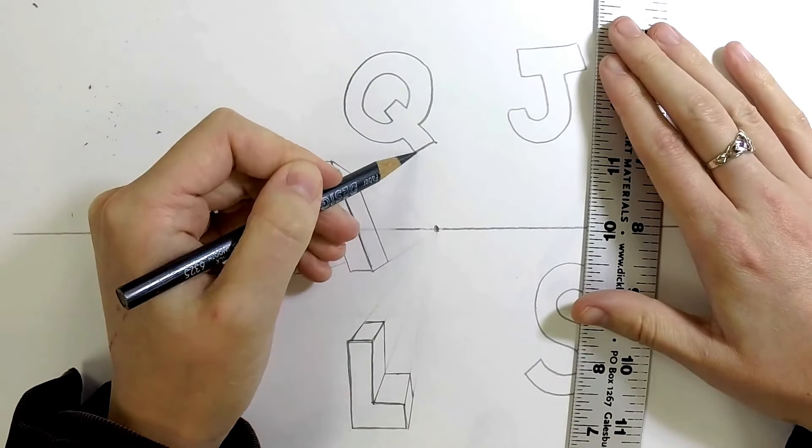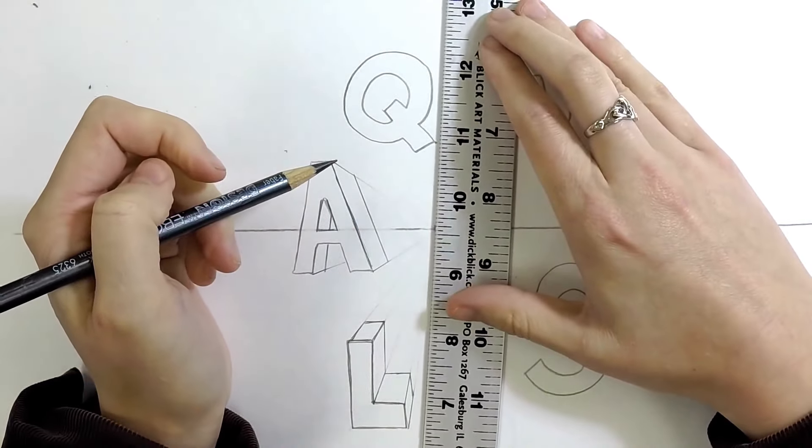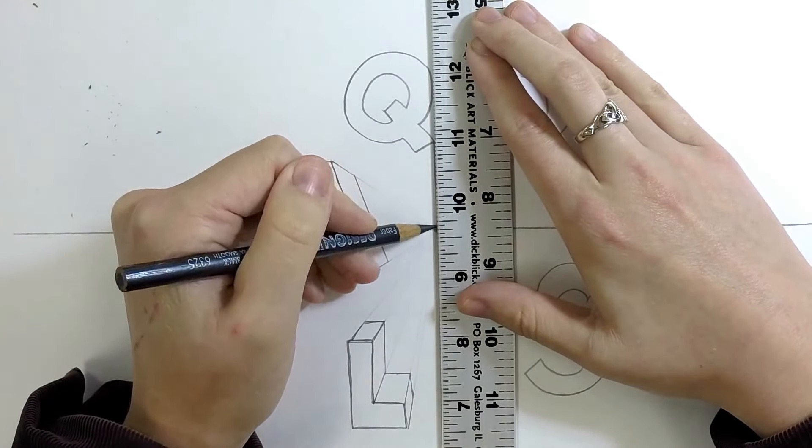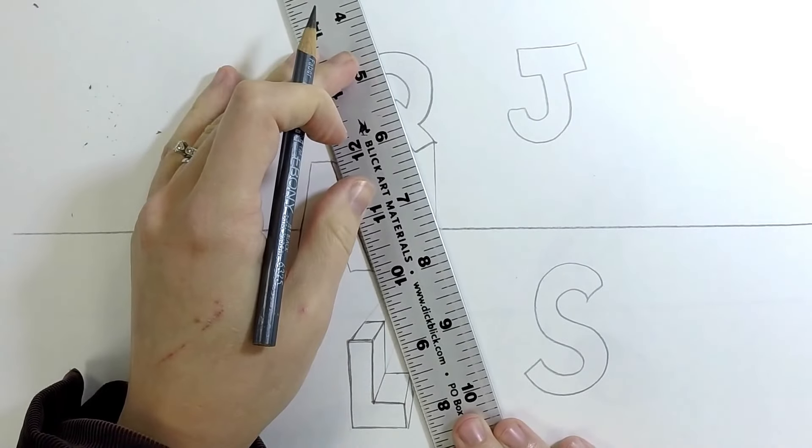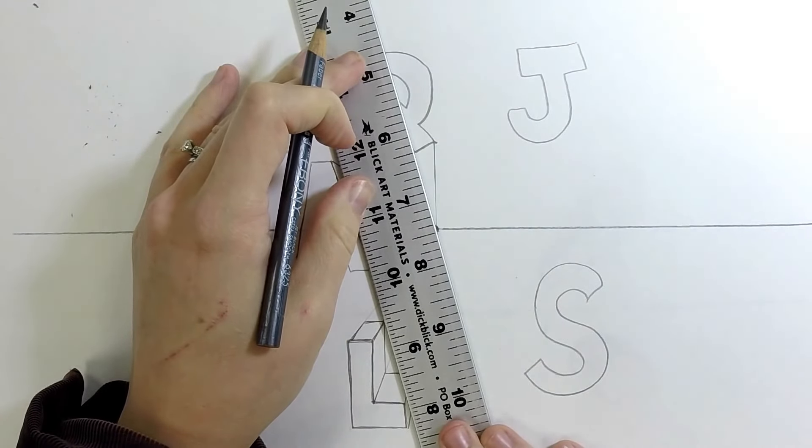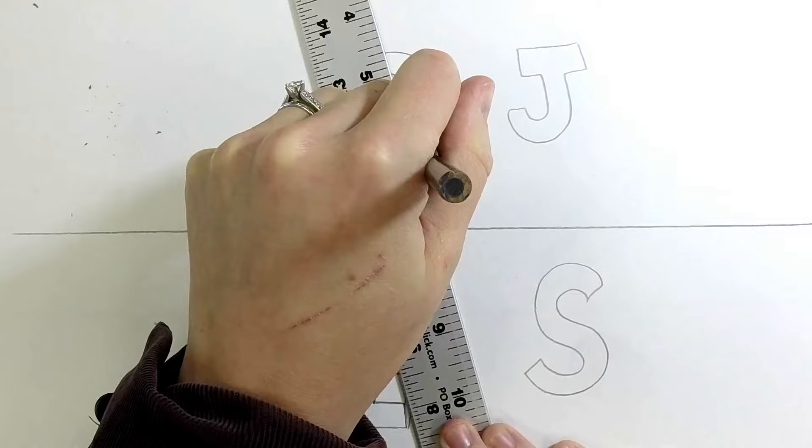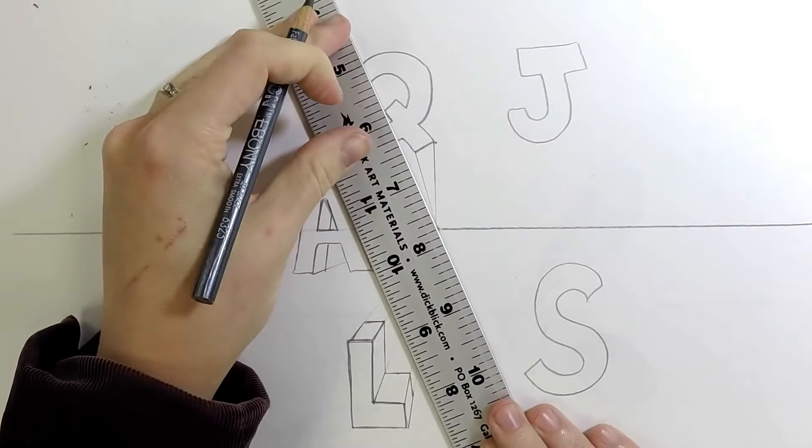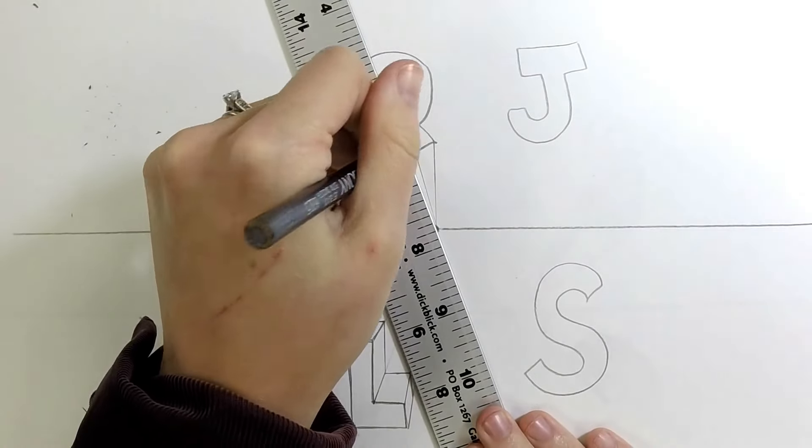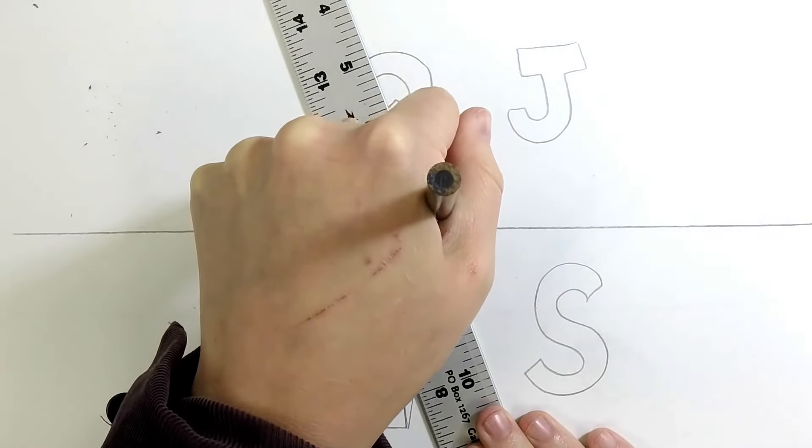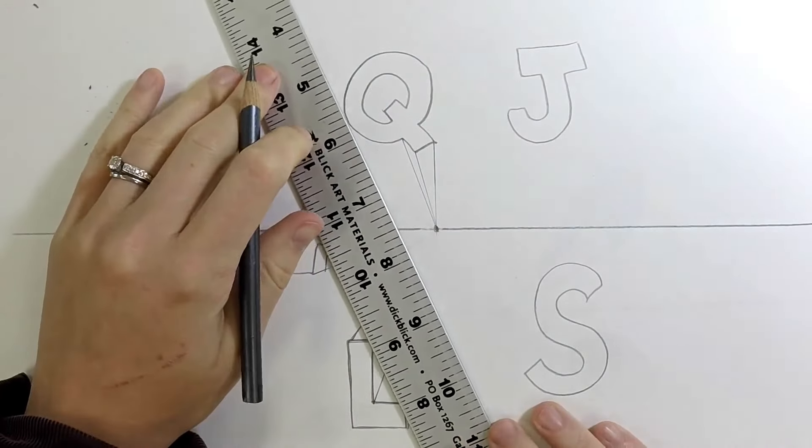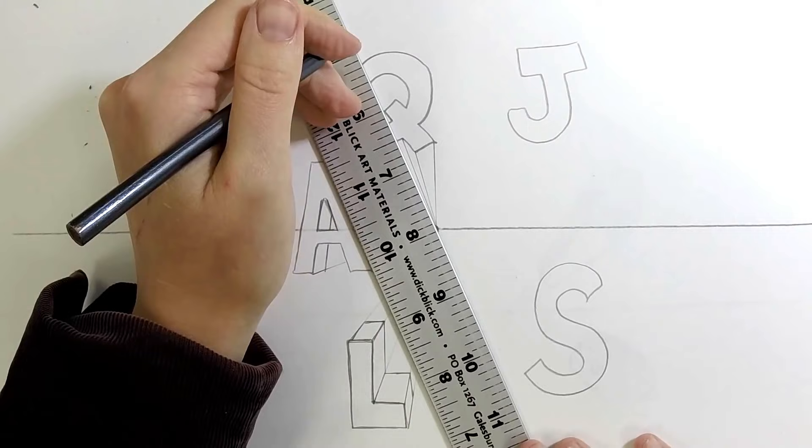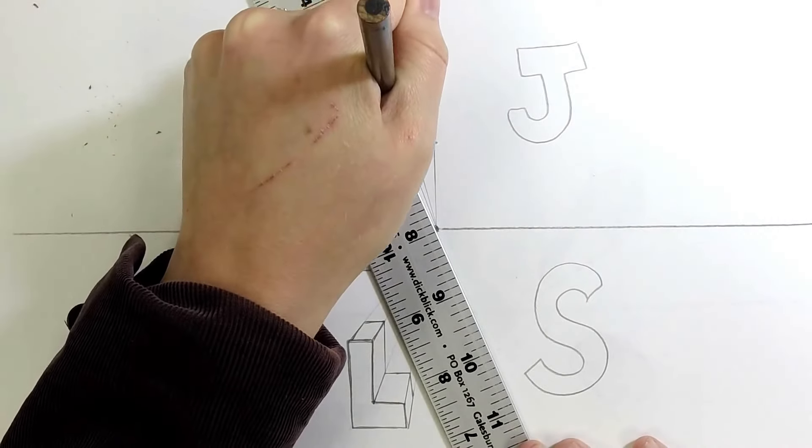Now we're going to start getting a little more challenging with our letters with more curves. So we'll start with the easy parts first. We'll start with these definite edges.